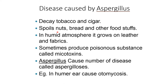Diseases caused by Aspergillus: they can decay tobacco and cigars. They spoil nuts, bread, and other foodstuffs. In a humid atmosphere, it grows on leather and fabrics. Sometimes they produce poisonous substances called mycotoxins. Aspergillus causes a number of diseases called aspergillosis. For example, in humans, it can cause otomycosis of the ear.